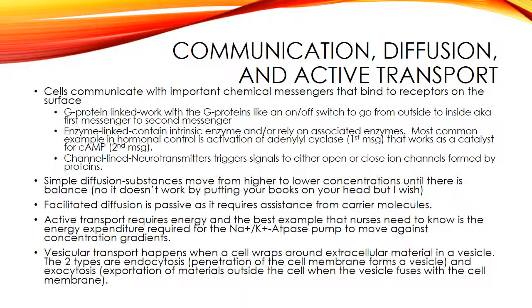The life cycle of the cell is called the cell cycle. It's usually divided into five phases: the resting phase at G0, G1 where the cell begins to prepare for cell division, the S phase during which DNA replication occurs, G2 which is a pre-mitotic phase, and then the M phase when mitosis occurs and a parent cell divides into two daughter cells that each receive an identical pair of chromosomes.